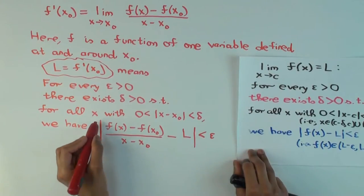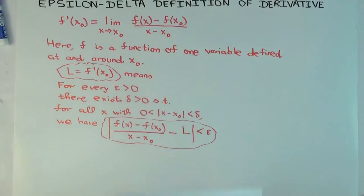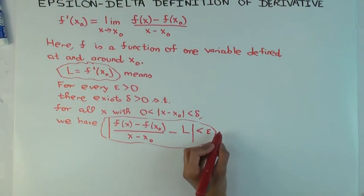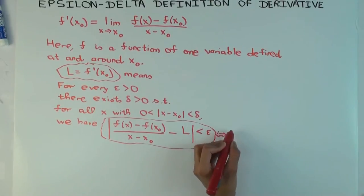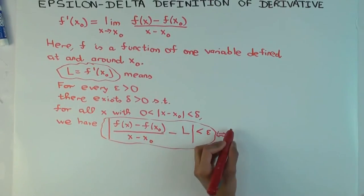Now, if you want, this thing you can rewrite in another way. Check this out. Now, this is the same as saying that if you multiply both sides by mod x minus x naught, you take the common denominator.